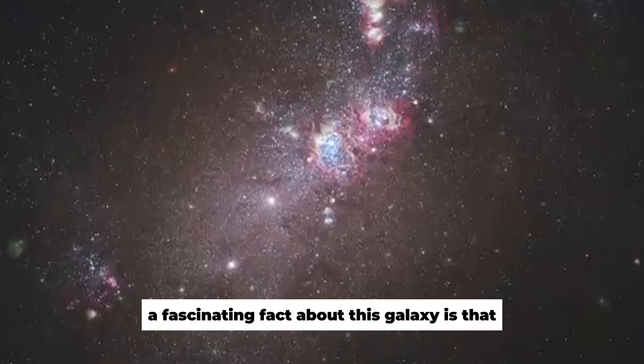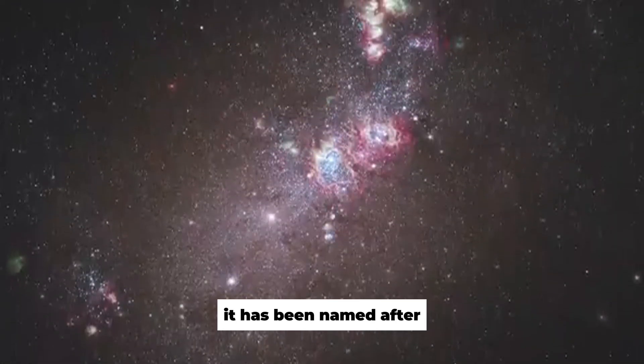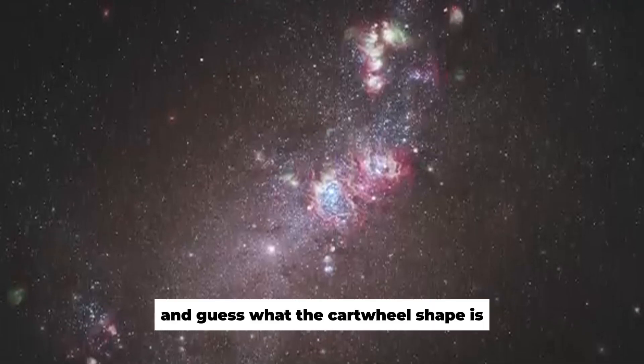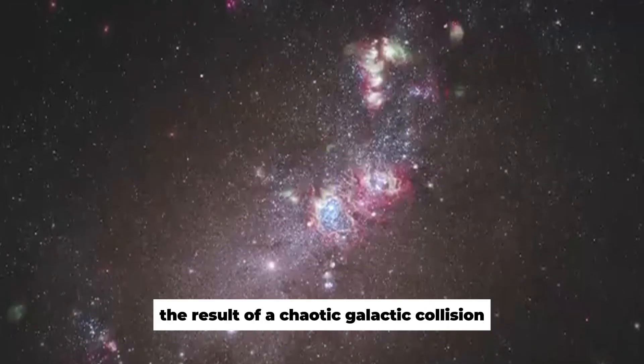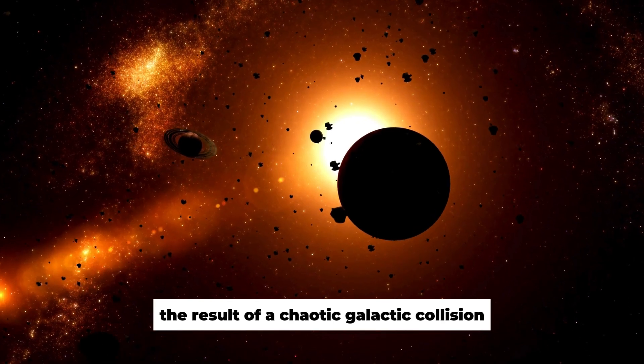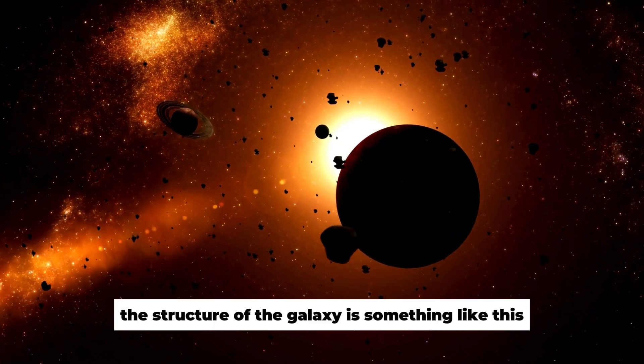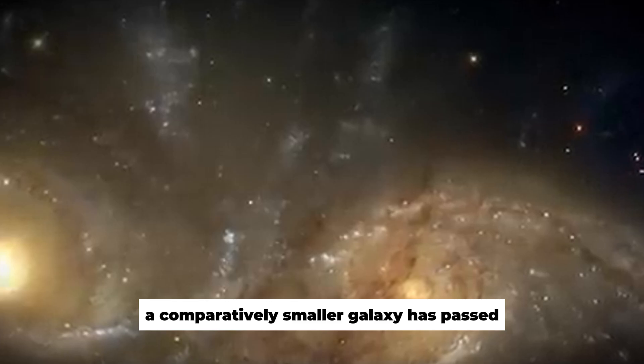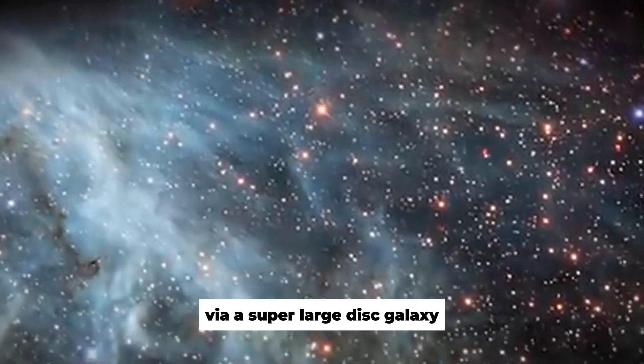And guess what? The cartwheel shape is the result of a chaotic galactic collision. The structure of the galaxy is something like this. A comparatively smaller galaxy has passed via a super-large disk galaxy.